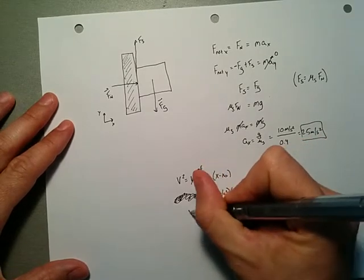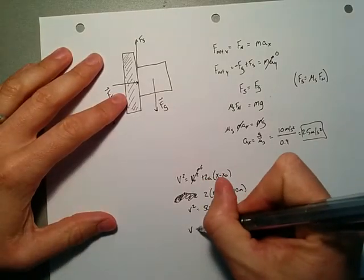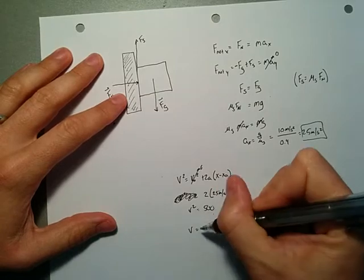And what's the square root of 500? I don't know off the top of my head. 10, 20, what does 20 is 400. So it's like 23 or something like that. So my final velocity is something like 23 meters per second or so.